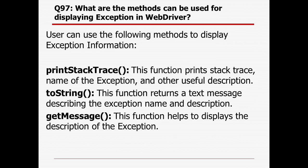What methods can be used for displaying exceptions in WebDriver? There are three important methods: first, printStackTrace() — this prints the stack trace name of the exception and other useful descriptions. Second, toString() — returns a text message describing the exception name and description. Third, getMessage() — helps to display the description of the exception. These are the three important methods the user can use for displaying exceptions in Selenium WebDriver.